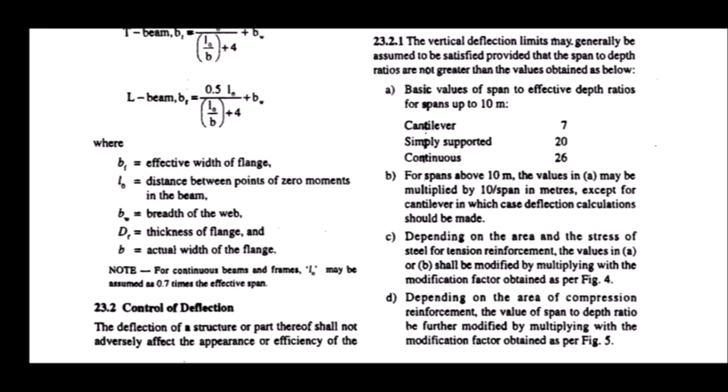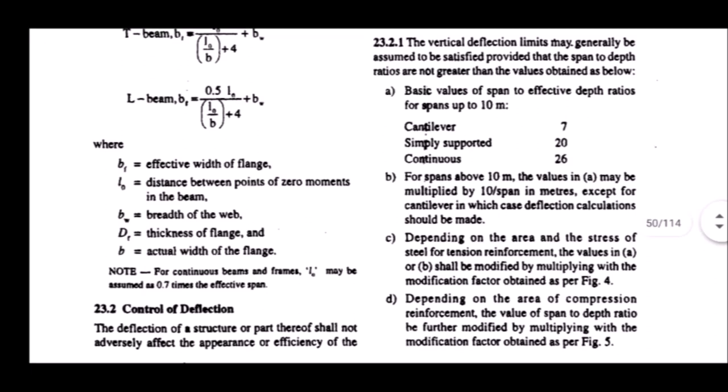In this problem, we are using simply supported, so the span to effective depth ratio, that means L by D, is equal to 20. We have to multiply this with a factor called modification factor, as seen in point C. To find out the modification factor, we get the value from figure number 4.